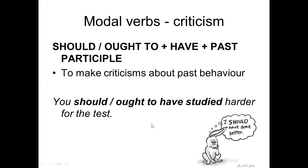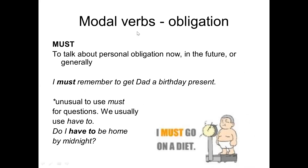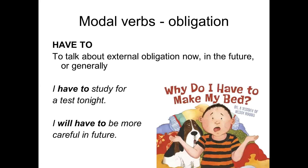For obligation — something very necessary to do — we use 'must.' We use 'must' for laws, necessity, or importance. For example: 'I must remember to get that birthday present' or 'I must go on a diet.' For questions, we usually use 'have to': 'Do I have to be home by midnight?' We can also use 'have to' / 'has to' in the present, and 'will have to' for the future.